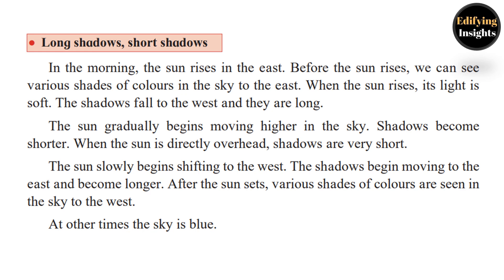In the morning the sun rises in the east. Before the sun rises we can see various shades of colors in the sky to the east. When the sun rises, its light is soft and the shadows fall to the west — they are long. The sun gradually moves higher; shadows become shorter. When the sun is directly overhead, shadows are very short. The sun slowly shifts to the west, shadows move to the east and become longer. After the sun sets, various shades of colors are seen in the sky to the west. At other times the sky is blue.